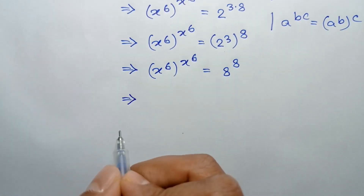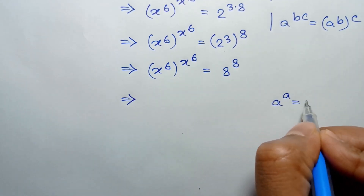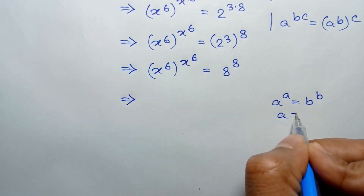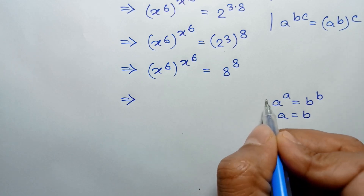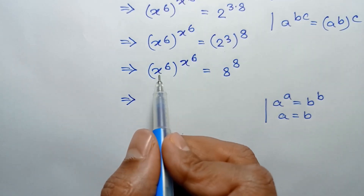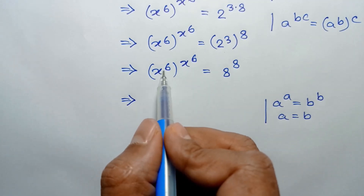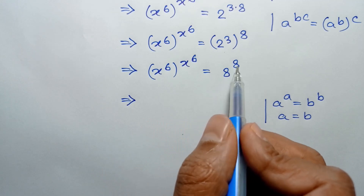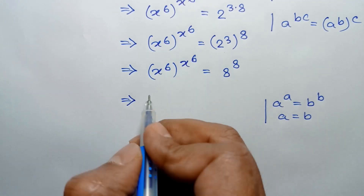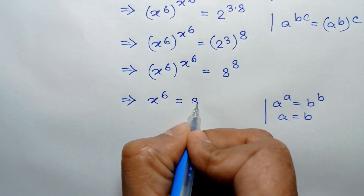Now, according to this formula, when a to the power a is equal to b to the power b, then a is equal to b. We can compare x to the power 6 as a and 8 as b. So a to the power a is equal to b to the power b means x to the power 6 is equal to 8.